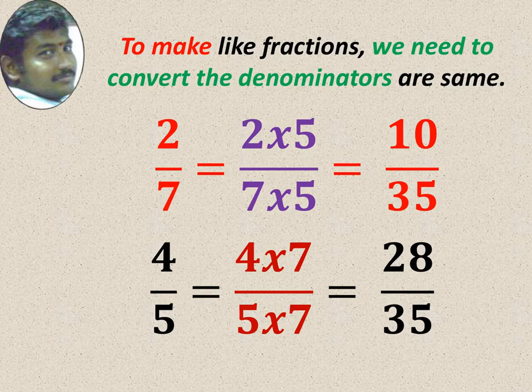Here, I multiplied 2 into 5 and 7 into 5, so that I get 10 by 35. 4 by 5, I multiplied 7, numerator and denominator. I get 28 by 35. Now 10 by 35, 28 by 35, both are like terms.